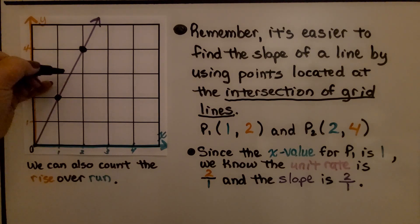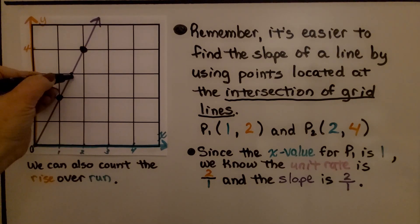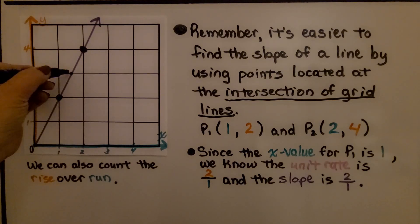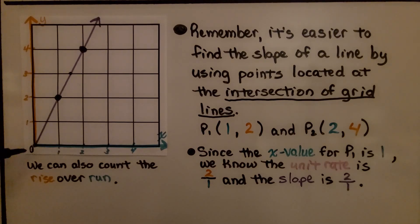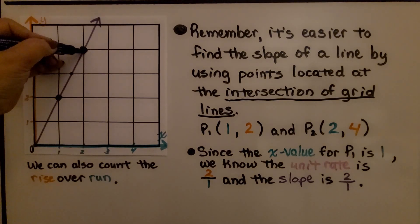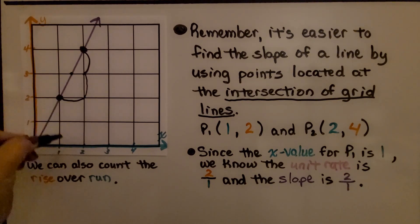If we had used a non-intersection point, we would have had 1 and a half for x and 3 for y — much harder to work with. Since the x-value for point 1 is 1, we know the unit rate is 2 over 1 and the slope is 2 over 1. We can actually count the rise and the run: 2 units for our rise and 1 unit for our run. It's 2 over 1.